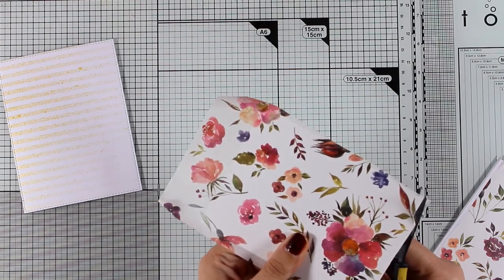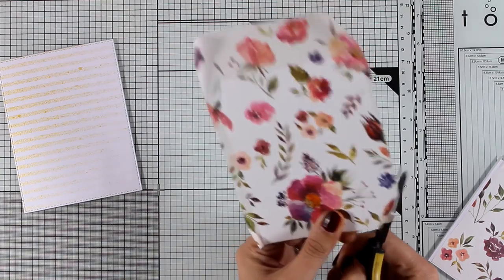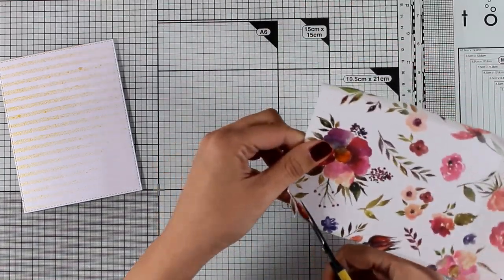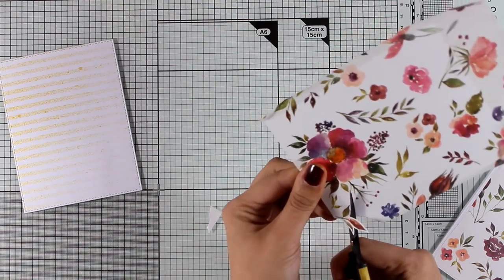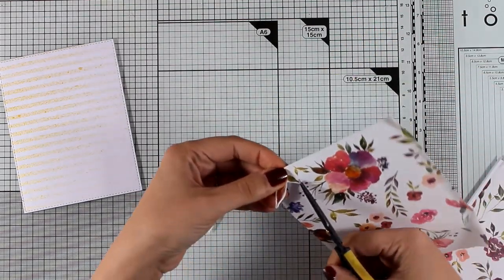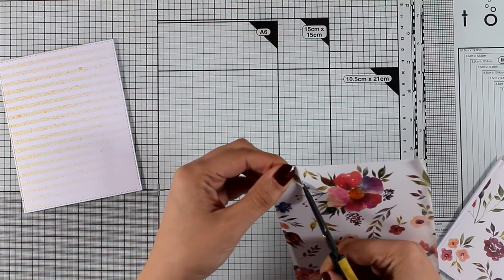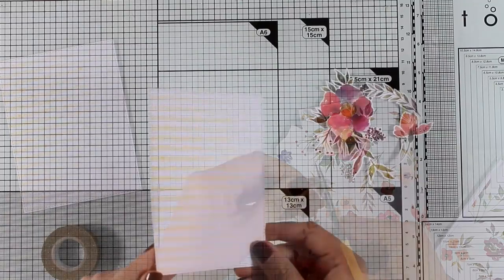So I wanted to give you an idea on how you can use this washi tape. So instead of the obvious of just sticking this on your background you can actually use the designs printed on this washi tape and turn them into focal points on your cards. So I'm just going to cut out different images like leaves and flowers and then I am going to combine everything on top of my card.